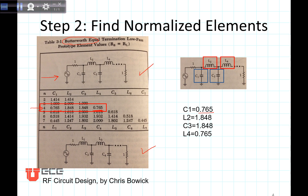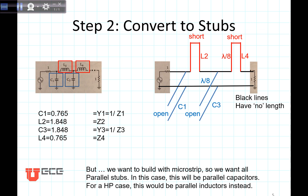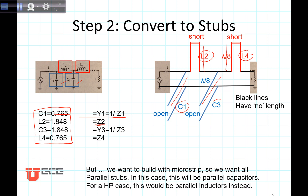This is a lumped element low-pass design. Now we want to convert that to stubs. Here are the values that we read out of the table, and here's how they convert to stubs. A capacitor is going to be a stub that has an impedance of 1 over the capacitance. And an inductance — the stub impedance is going to be the same as the inductance value. Each of these lines is 1/8 of a wavelength long. We have two parallel capacitors shown as the blue lines, and two short-circuited stubs that represent inductors. The black lines effectively have no length in this design.